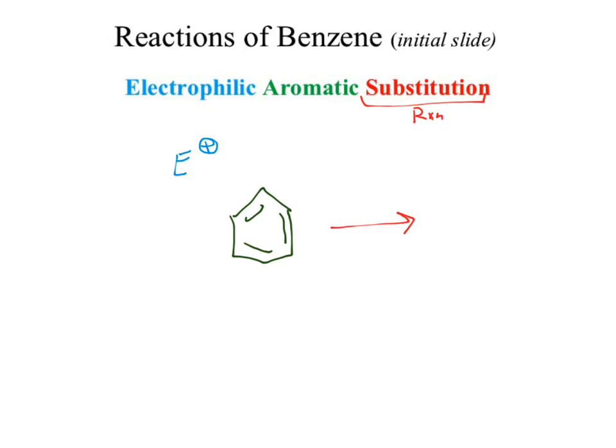At first blush, we could compare it back to functional groups we've already seen — we could look at an alkene. Alkenes react as nucleophiles or bases; they do not react as electrophiles. So that would suggest I now have all of the reagents to run a reaction. I have an electrophile and I have my nucleophile in the benzene ring. To do the substitution, that E needs to substitute for something in that ring.